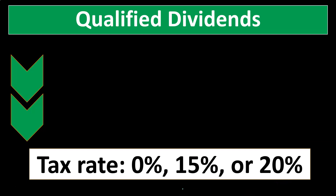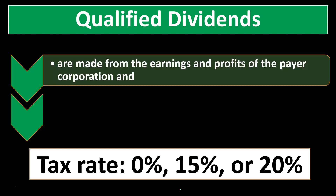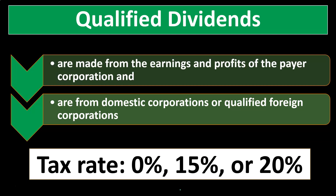If it's a qualified dividend, we no longer use the normal ordinary income rates — the progressive rates for head of household, married, single, and so on. Instead, we have another set of rates: either 0%, 15%, or 20%. The idea is to have a lower rate for qualified dividends to support investment in local US companies. Qualified dividends are made from the earnings and profits of the payer corporation — the general rule is they come from domestic corporations or qualified foreign corporations. We incentivize investments in domestic corporations by applying a lower tax rate.